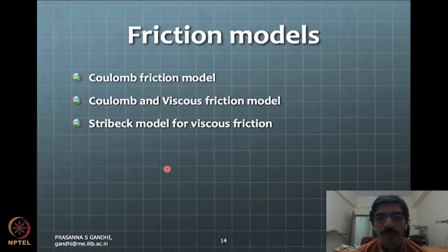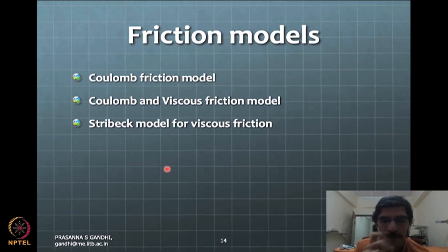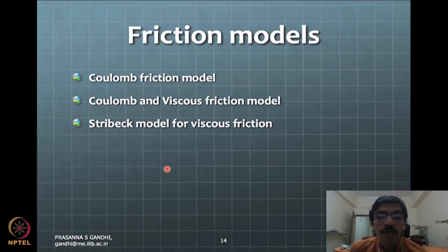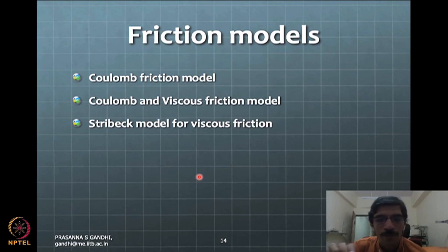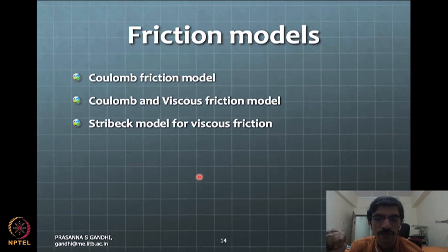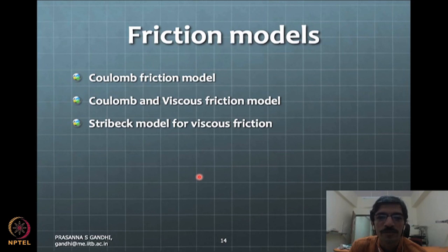Say you have a block resting on a surface, applied by some force F, and opposed by a friction force Ff. How do you write the dynamics of this system? F equals m times acceleration plus the friction force Ff. How do you express Ff as a mathematical equation?